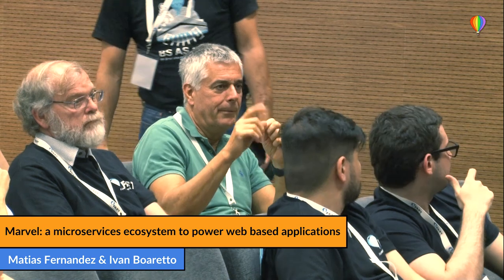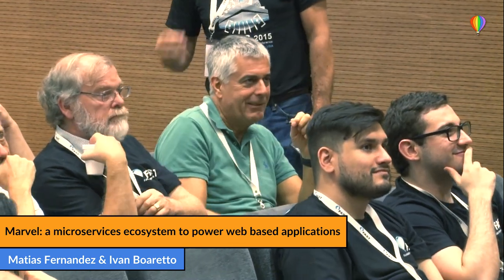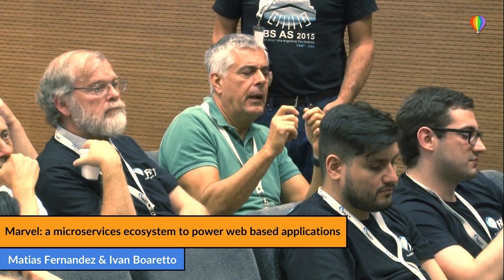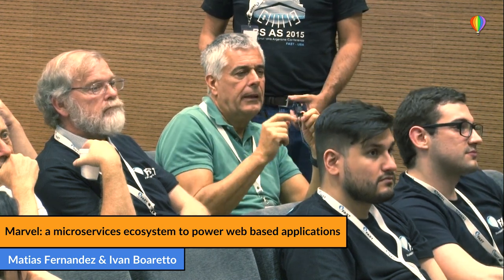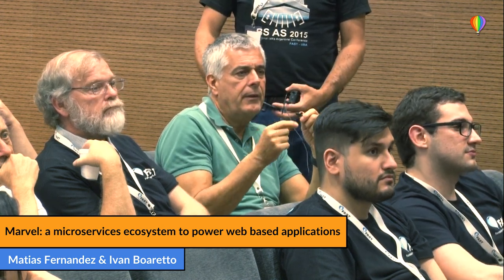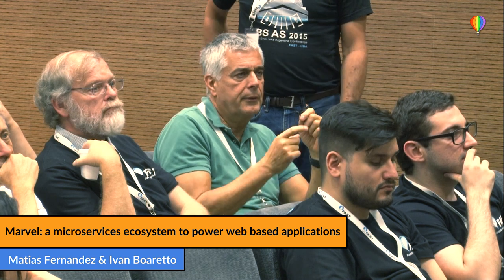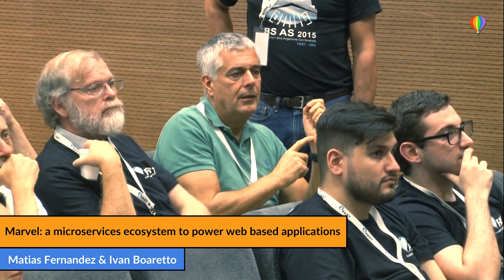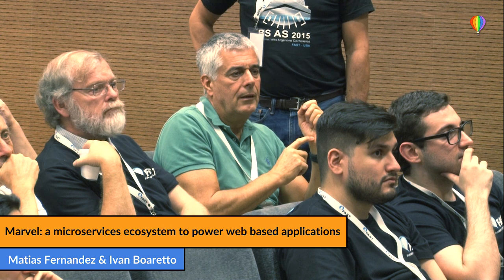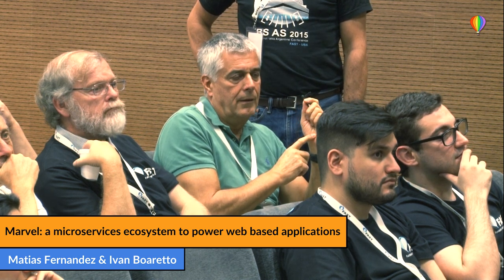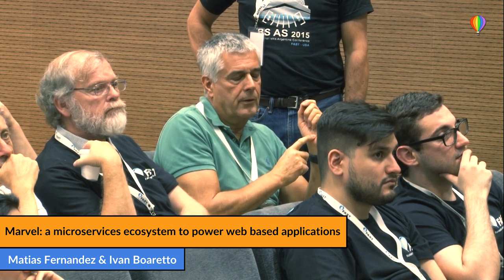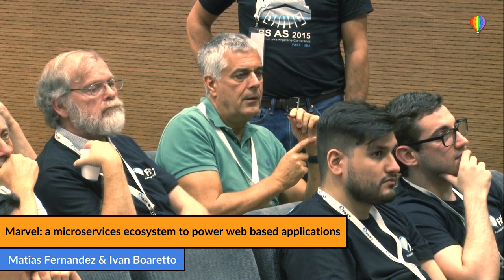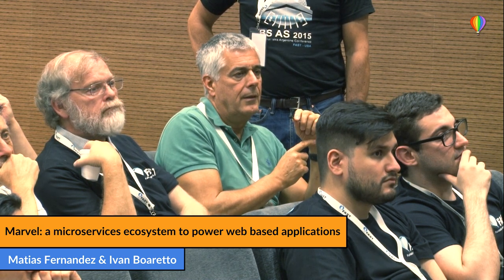Question from audience: What do you use to communicate between every single Docker image — web services, Kafka, MQTT? Answer: On most of our services we use REST APIs. Some of them are JSON-RPC APIs. And on the historical price service that was mentioned, we use RabbitMQ for our queues.